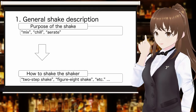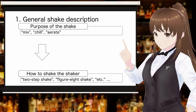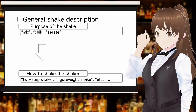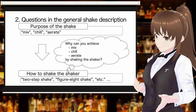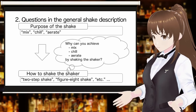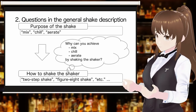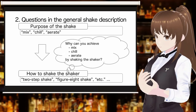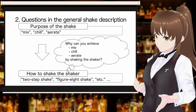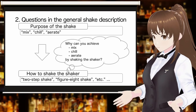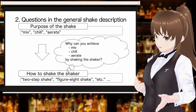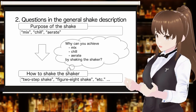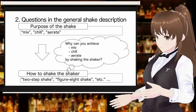Additional explanations such as the importance of using the snap when shaking are also usually given. However, it is rarely explained why shaking the shaker achieves the objectives of mix, chill, and aerate. Also, the effect of shaking on the movement of ice and liquid inside the shaker is not explained — it is only stated that shaking causes complicated movement inside the shaker.